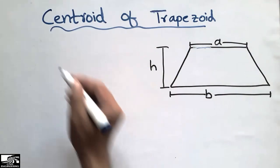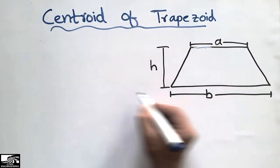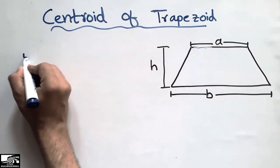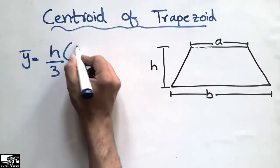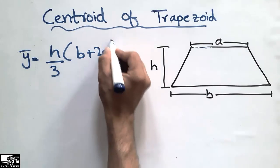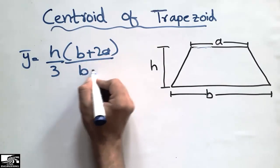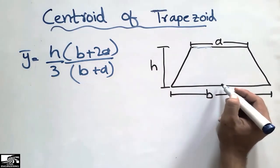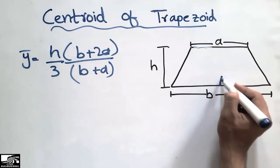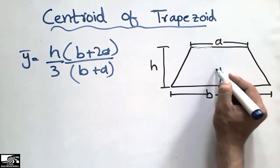The centroid of the trapezoid can be found using this formula: y-bar equals h by 3 times (b plus 2a) divided by (b plus a). Y-bar means the centroid distance from the bottom along the y-axis in the vertical direction.